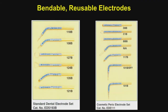Here are some reusable tips, and basically I only used about four, five, or six tips for all the radiosurgery that I did. The real workhorse is the 108. You can see the round tip on the 127, which is used for an ovate pontic, and then on the 124 we use that for placing the bevel.